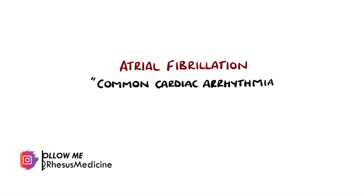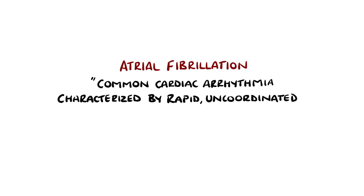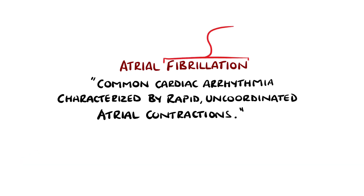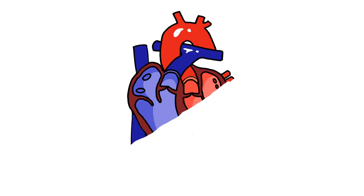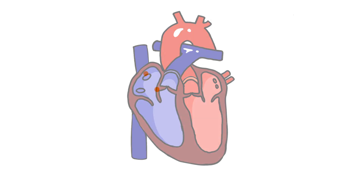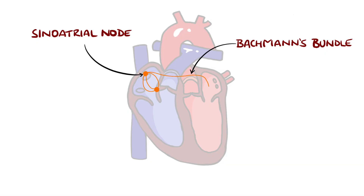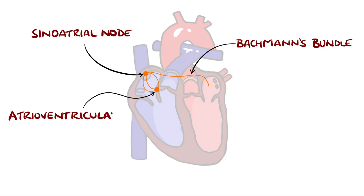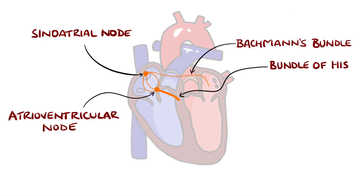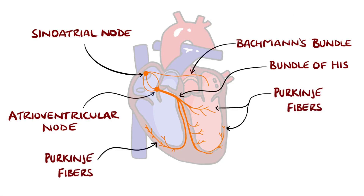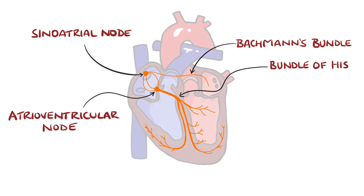Atrial fibrillation is a common cardiac arrhythmia characterized by rapid and uncoordinated contractions of the atria, known as fibrillations. Normally the heart rhythm is a product of electrical discharge at the sinoatrial node, followed by conduction of the signal across to the right atrium via Bachmann's bundle, leading to atrial contraction. From here the impulse moves down through the atrioventricular node, through the bundle of His and into the Purkinje fibers, causing ventricular contraction and a coordinated beat.